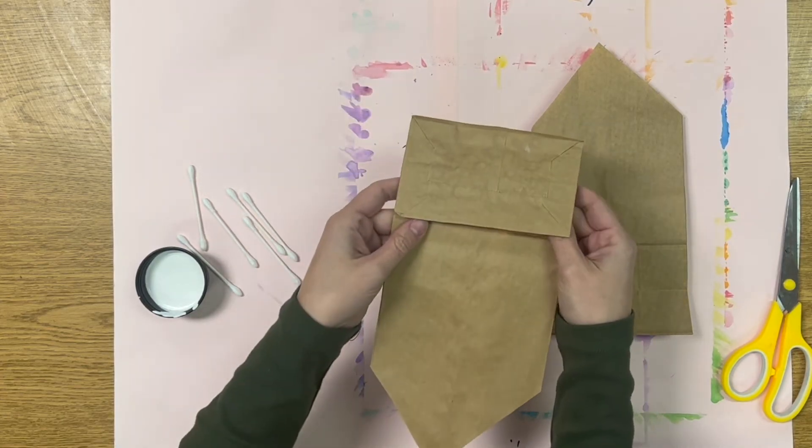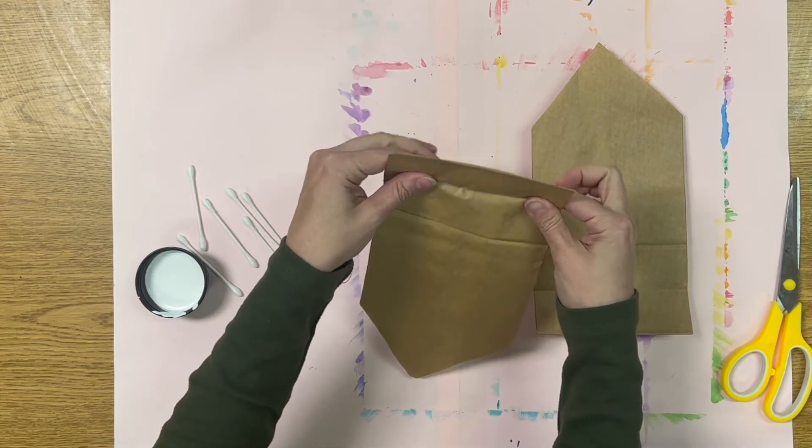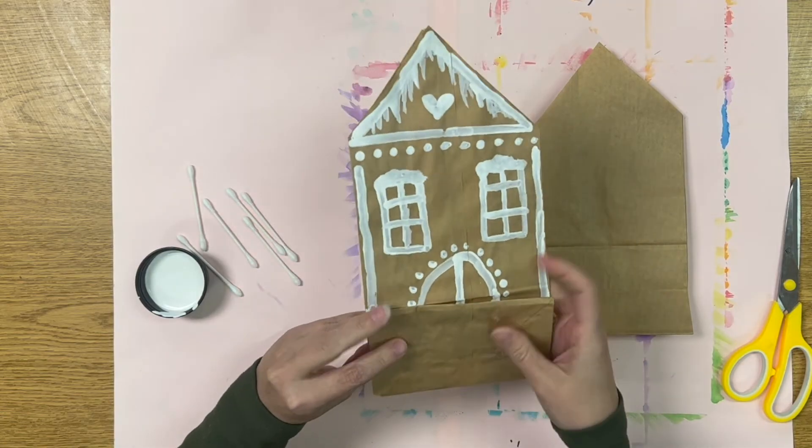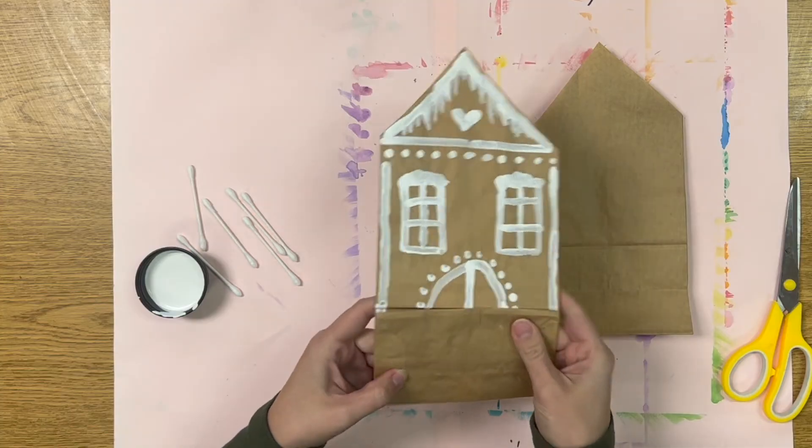Again, you are going to take the flap and you are going to fold it over to the other side that has already been painted. That way you will be able to paint this entire side.